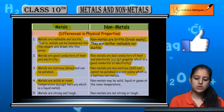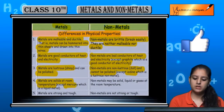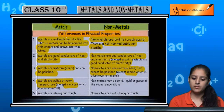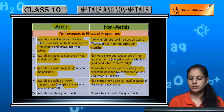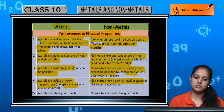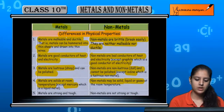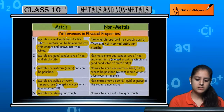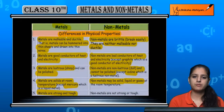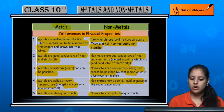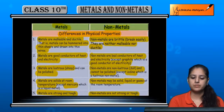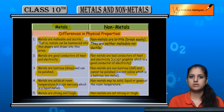Metals are solids at room temperature — except mercury, which is a liquid. Non-metals can be solid, liquid, or gas at room temperature. Metals are strong, tough, and hard, but non-metals are not strong or tough. So these were the physical properties of metals and non-metals.